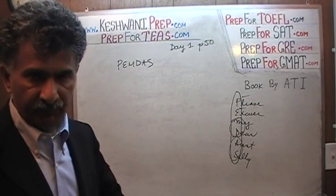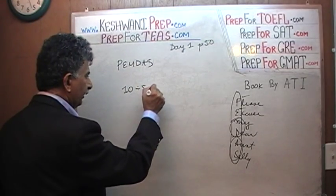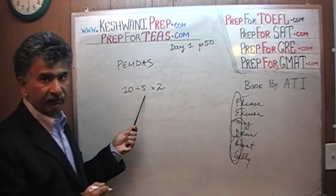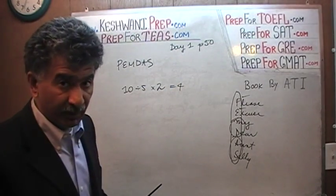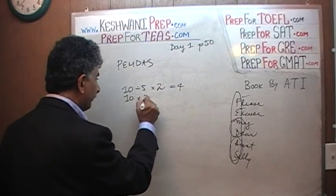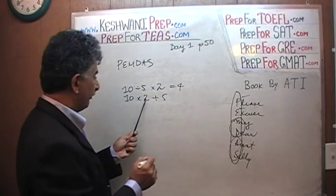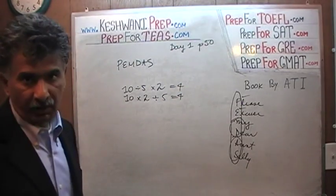For example, if somebody tells us 10 divided by 5 times 2, we know 10 divided by 5 is 2, 2 times 2 is 4. We would have gotten the same answer had we done 10 times 2 divided by 5. As you can see, it has the same priority.